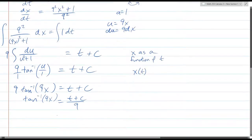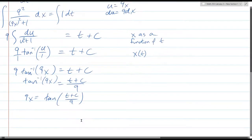Get tangent, take tangent of both sides. So now I have 9x equals tan of t plus c over 9. And last step, multiply by one ninth.